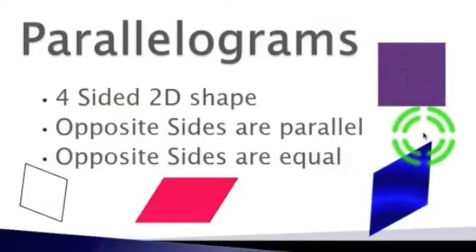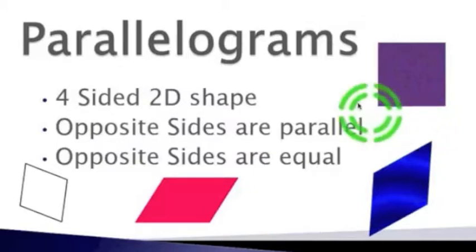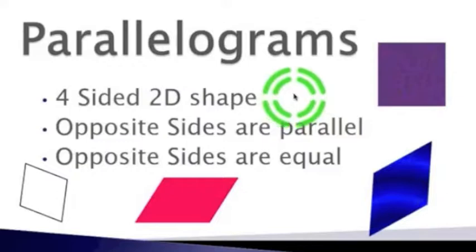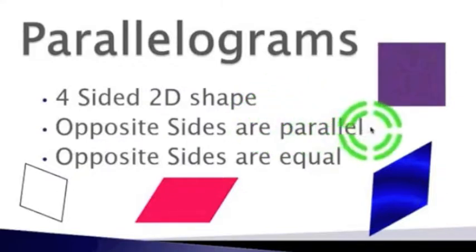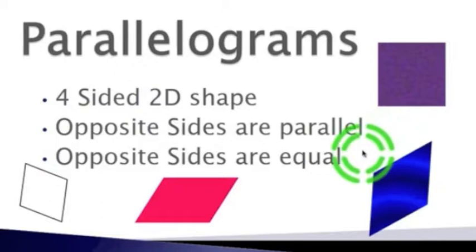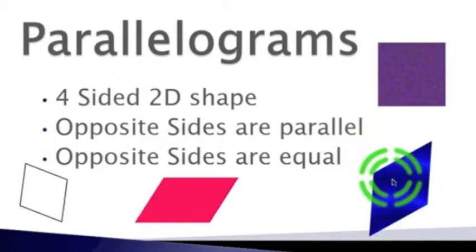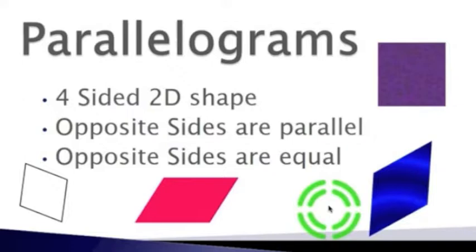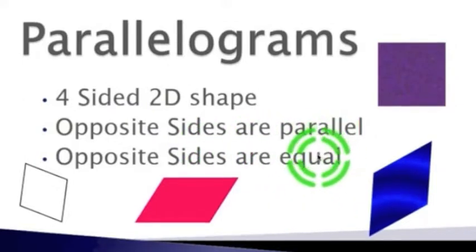The last type of geometry figures we are going to talk about are parallelograms. Parallelograms are a lot like quadrilaterals — they are four-sided and two-dimensional. The difference is that opposite sides are parallel, meaning those sides will never touch no matter how far you extend them, and opposite sides are equal, meaning they are the exact same length.